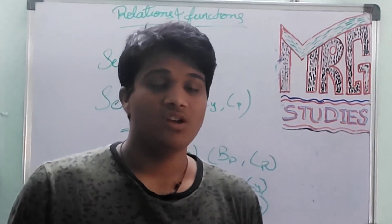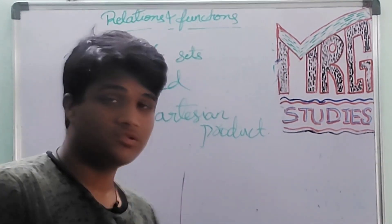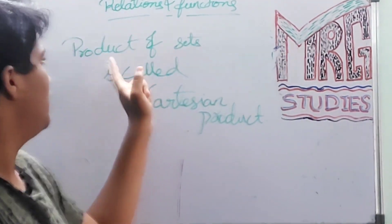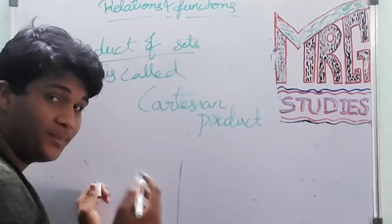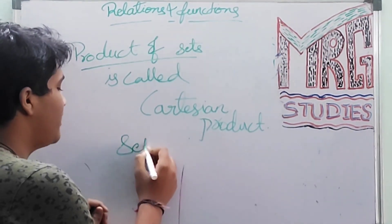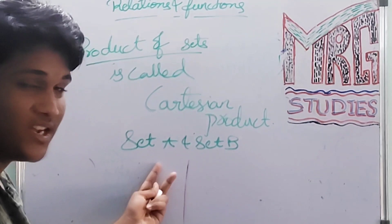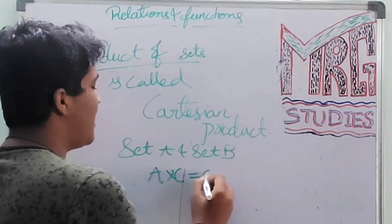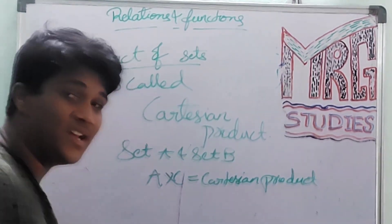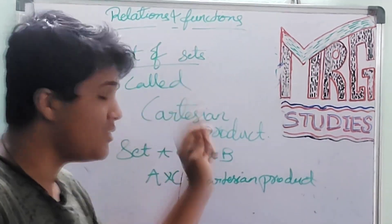Now I will write the definition. The product of sets is called the Cartesian product. Product of sets means the multiplication of sets — like we did when we took the outcome of combinations. If we have set A and set B, to get the Cartesian product we should do A into B. Multiplying the sets means the product of sets, and that is important you should remember.